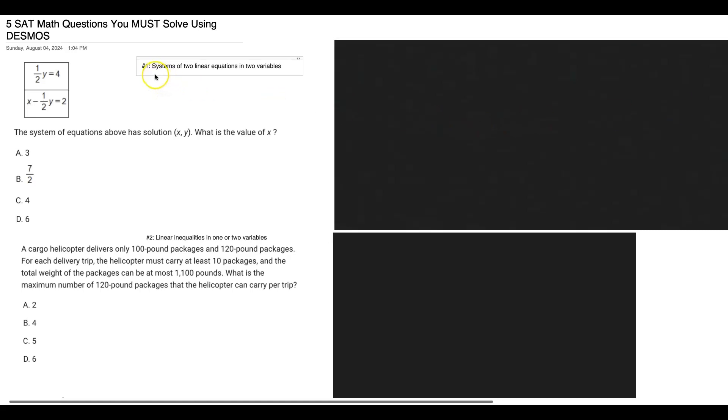The first question type is systems of two linear equations in two variables. I've picked out a very easy example that you probably should do by hand because it's pretty straightforward.